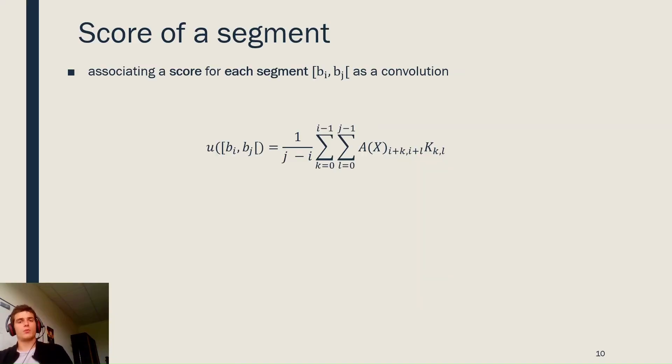To this end, we assign a score to each possible segment in the song. So this score is obtained by weighting the auto-similarity values in the matrix, and concretely, we apply a convolution between a kernel matrix K, which is a weighting matrix, and the auto-similarity matrix A, restricted to the current segment.